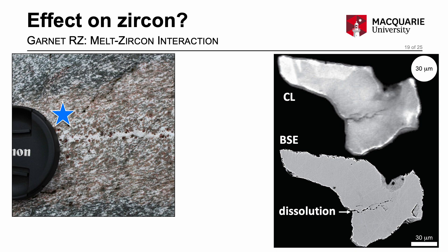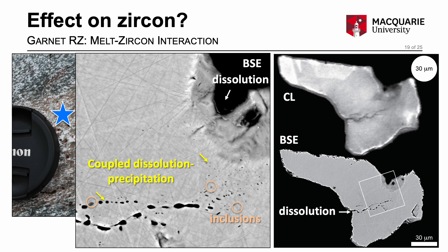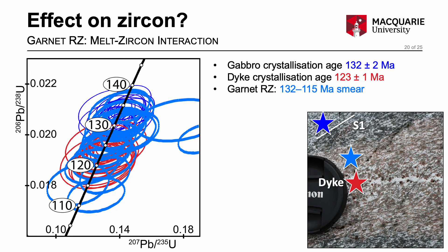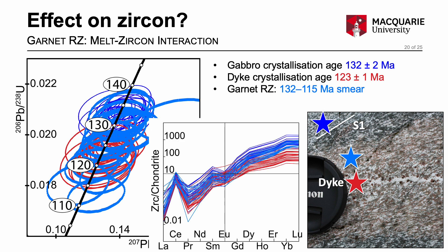Now returning to our case study in New Zealand, the zircon grains from the garnet reaction zones that formed adjacent to the felsic dyklets show highly irregular shapes consistent with dissolution of parts of the grains. Internal to the zircon there is spectacular preservation of fine porosity that is distributed, and coarser porosity that forms trails. Some pores are filled with epigenetic mineral inclusions. Uranium-lead geochronology indicates that zircon in the garnet reaction zones have ages smeared over 10 to 15 million years, between that of the original gabbro and a little bit younger than the age of the dykes. Rare earth element patterns of the zircon from the garnet reaction zones are most similar to grains from the host gabbroic gneiss, but do show minor depletion in the heavy rare earth elements as garnet was growing in these reaction zones.